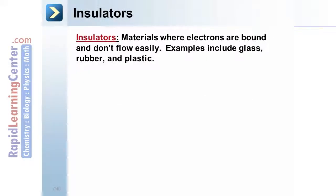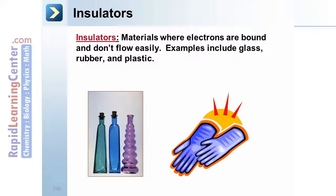Insulators. Now the opposite. Materials where electrons are bound and don't flow easily. Examples include glass, rubber, and plastic. Here the electrons are fixed in place, so are not transferred.